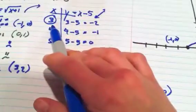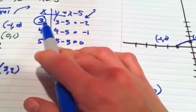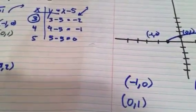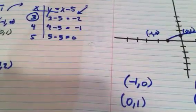So now we go to our second guy, 3, negative 2, 4, negative 1, and 5, 0.